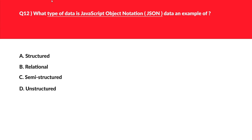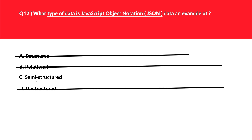This question asks about data types for a common scenario. Structured and relational options mean highly normalized, table-based, SQL-driven data — both are wrong. Unstructured is used for audio and video files stored in blob storage, so D is also wrong. We're left with semi-structured, which is correct. Always remember: whenever you see JSON, think semi-structured documents.